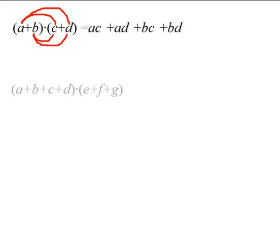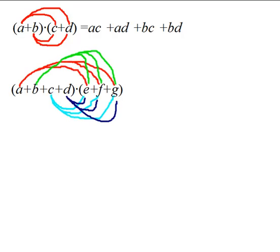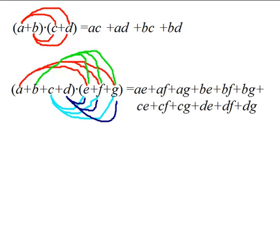For a different example consider a plus b plus c plus d times e plus f plus g. If we distribute we get ae plus af plus ag plus be plus bf plus bg plus ce plus cf plus cg plus de plus df plus dg. Now you should be able to look at this expression and understand the pattern. If you think about it you could color code each of these twelve terms.